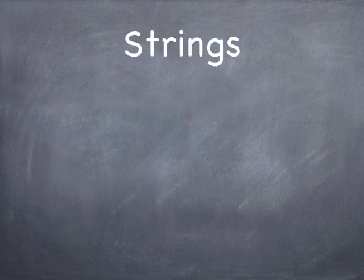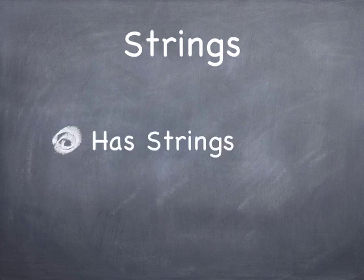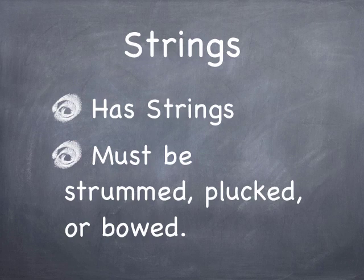Stringed instruments are another family. You guessed it — they have strings, and those strings must be strummed, plucked, or bowed. Strumming is like a guitar, plucking is like a harp, and bowing is like a violin.